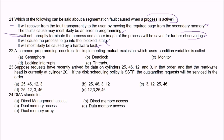Question 22: A common programming construct for implementing mutual exclusion which uses a condition variable — the answer is Monitor. Monitor uses the condition variable for implementing mutual exclusion.